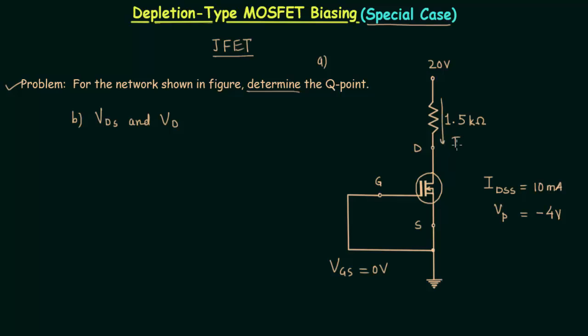If you put VGS equal to zero volts in Shockley's equation, you will find ID equals IDSS. So for this network, VGSQ equals zero volts and IDQ equals IDSS.